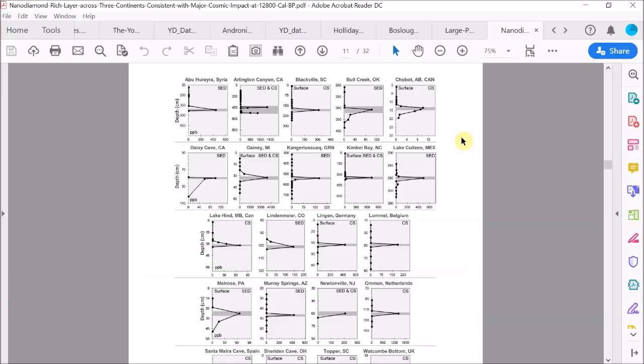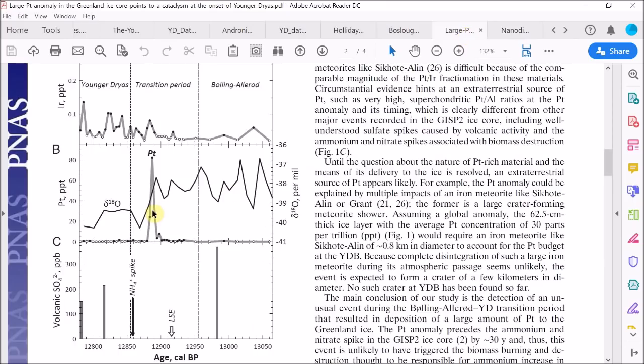The argument that these signals result from a series of unconnected cosmic impacts over the span of a few hundred years is extremely unlikely because there's only one major platinum signal in the Greenland ice. Also, multiple independent cosmic collisions are statistically extremely unlikely and there is no evidence that these signals were generated by volcanism.